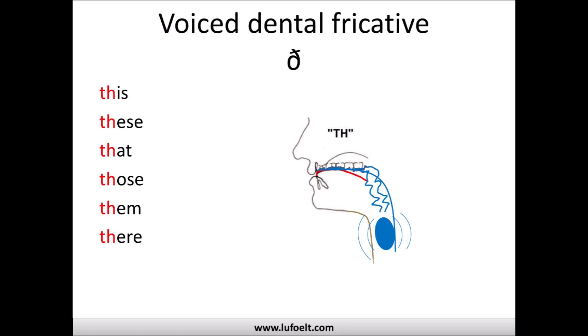First we'll be looking at the voiced dental fricative. Here are a few example words: this, these, that, those, them, and there. You can hear the TH sound for the voiced dental fricative. To help you practice pronunciation, basically you put the tip of your tongue — the front of your tongue — just in between your front and bottom teeth.